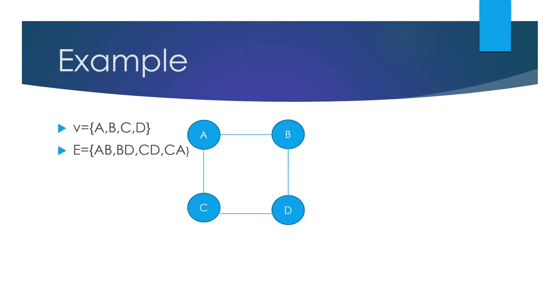This is an example of a graph where a, b, c, d are the vertices, and the edges are a-b, b-d, c-d, and c-a.